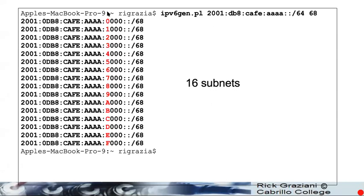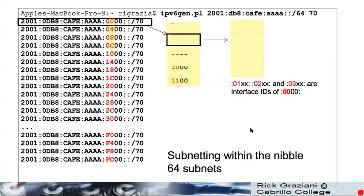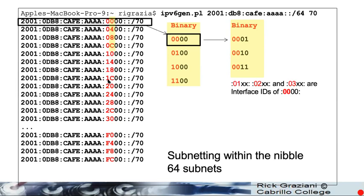Here's another example: what if we had a slash 60 and I wanted to borrow another four bits for a slash 64 and do a slash 68? It even works within the nibble. So, here it's showing us: what if I have a slash 64 and I want to subnet it using a slash 70? Here we can see — and again, look at the pattern — 0, 4, 8, C, then 10, 14, 18, 1C, 20, 24, 28, 2C.